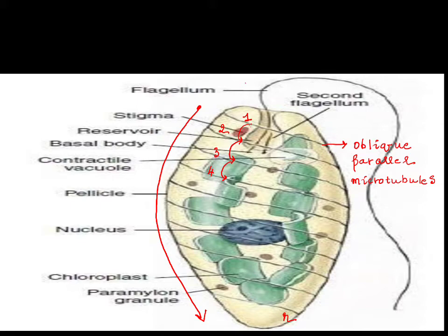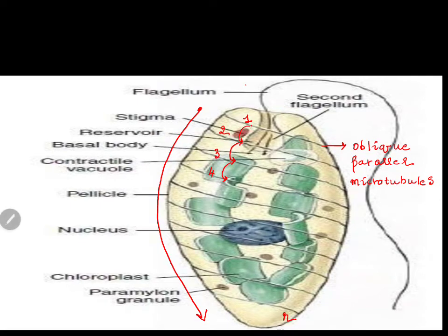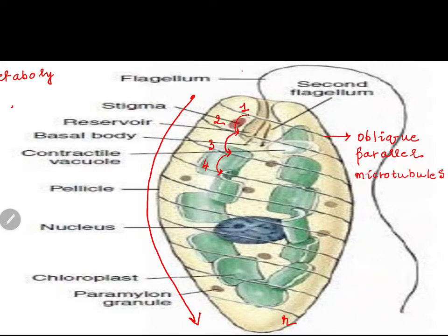The microtubules give flexibility to the cytoplasm, which can propel itself forward because the contraction is moving backward. This kind of movement is called metaboly. Because we see Euglena particularly performing this along with flagellar locomotion, it is also called euglenoid movement.